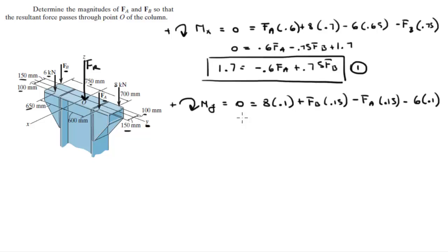When you clean this up, you get zero equals 0.2 minus 0.15FA plus 0.15FB. Keep cleaning this up and we get 0.2 equals 0.15FA minus 0.15FB. I'm going to call this equation 2.